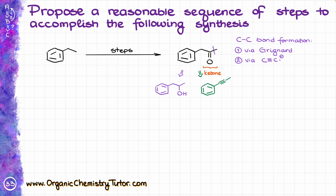So we can either use a Grignard to make the purple alcohol, or use acetylenide ions to make our green alkyne. Let's look at both a little more and see which method may be more efficient. I'll start with the green alkyne.